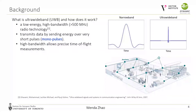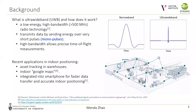In recent years, Ultra-Wideband (UWB) technology has received much attention due to its accurate and high-frequency measurements with tiny integrated circuits. These features make UWB a suitable indoor localization solution. UWB technology consists of emitting very short pulses, usually called nanosecond pulses. Thanks to its high bandwidth, UWB can achieve precise time-of-flight measurements. Recent applications involve asset tracking and indoor positioning, and UWB chips have been included in the latest generation of smartphones for faster data transfer and accurate indoor positioning.